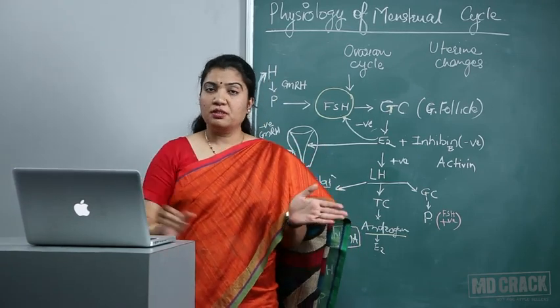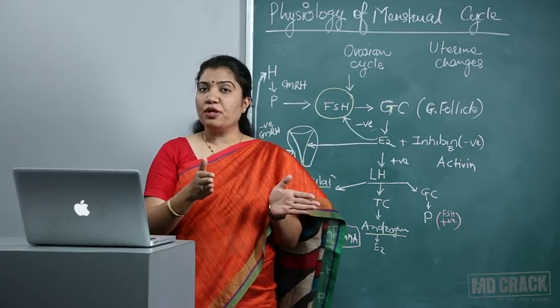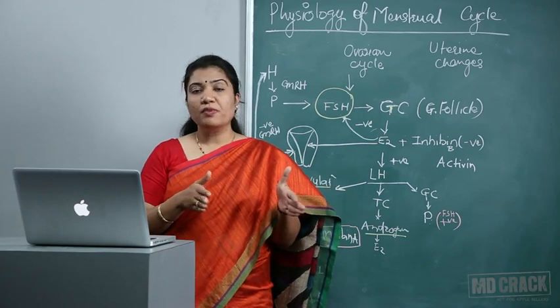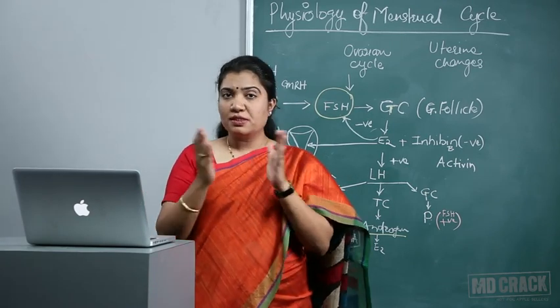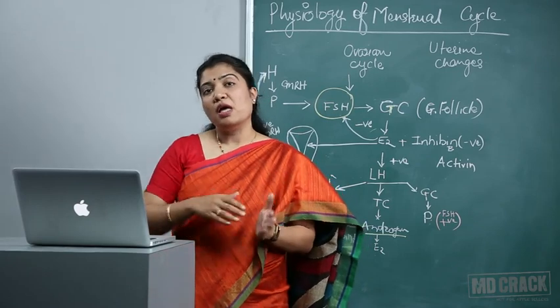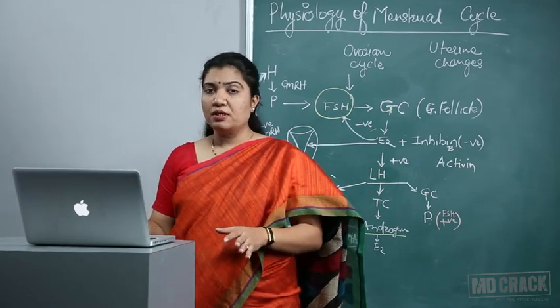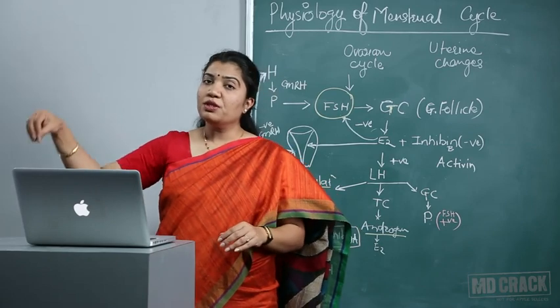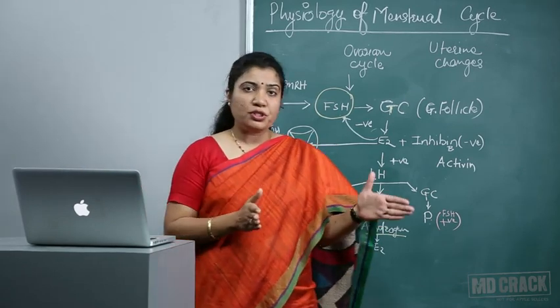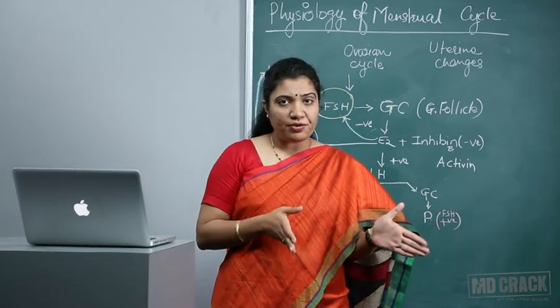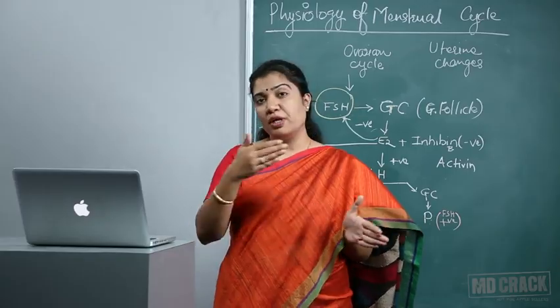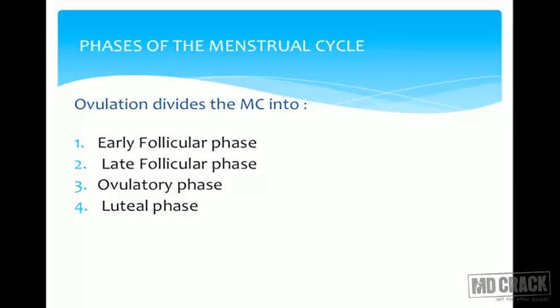Ovulation divides the menstrual cycle into: early follicular phase, late follicular phase when the follicle is developing, then the ovulatory phase, and after ovulation the luteal phase. In the uterus, the phase till ovulation is called the proliferative phase when the endometrium is proliferating. Once the corpus luteum forms, the second half of the cycle is called the secretory phase.